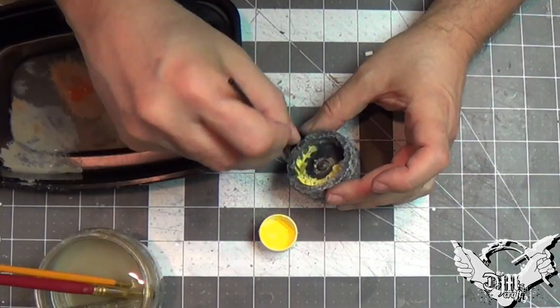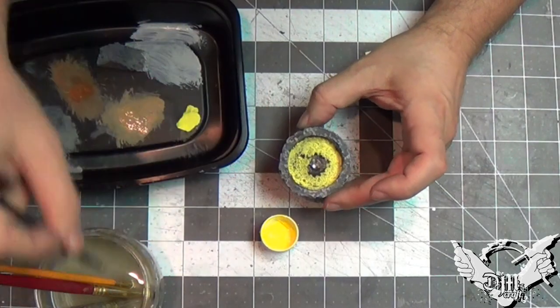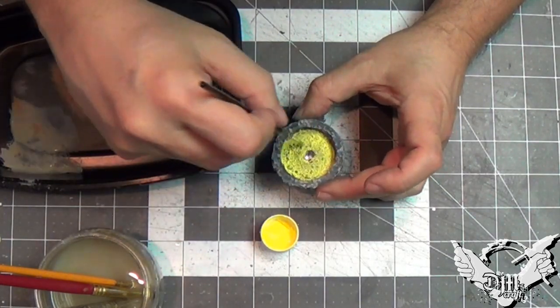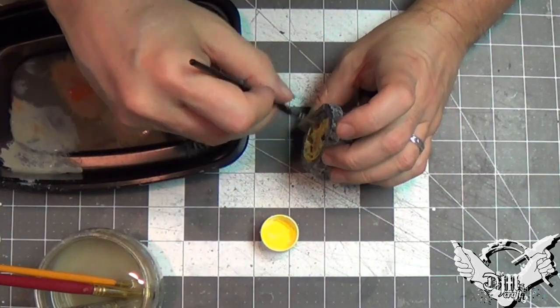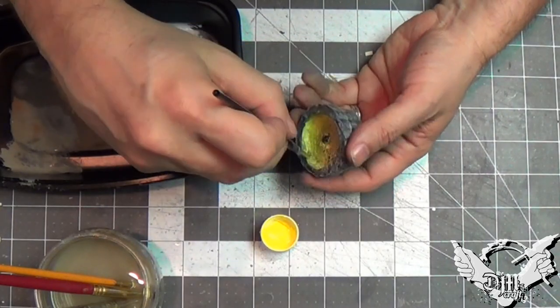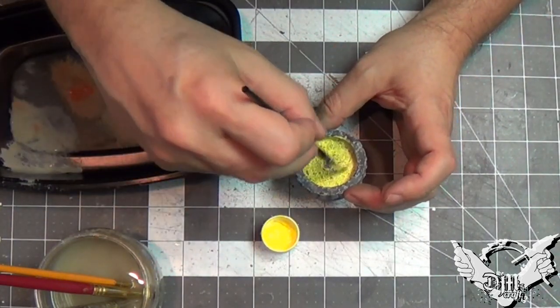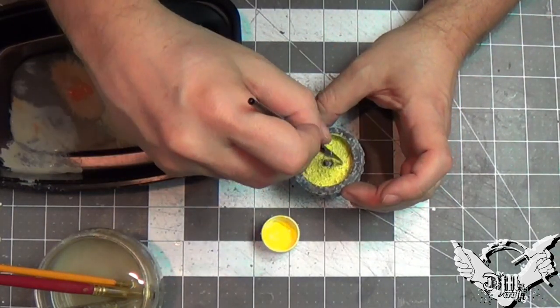Now, I'm going to paint on the inside with a yellow. And, this will all make sense in a few minutes. Don't cover up the light.